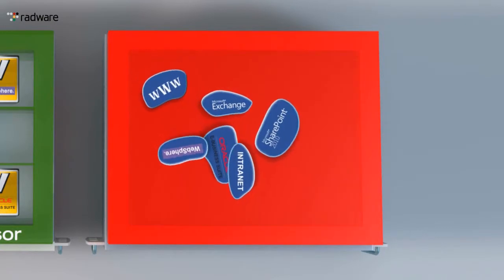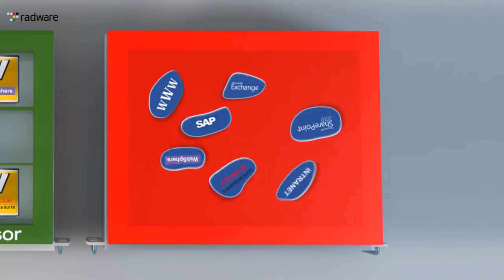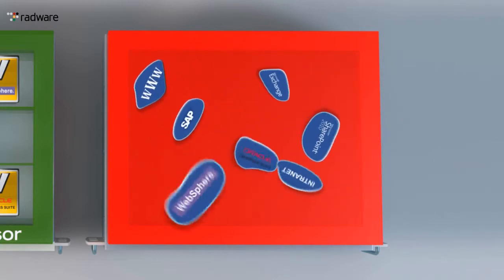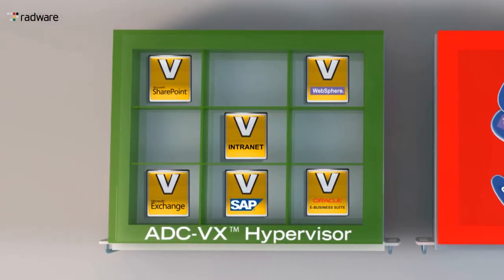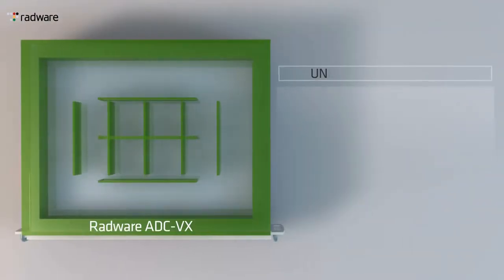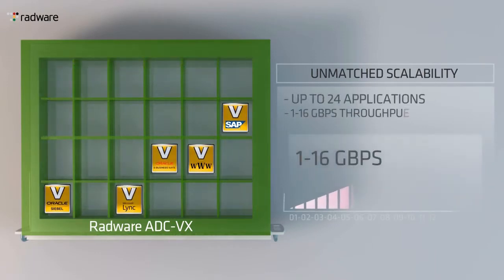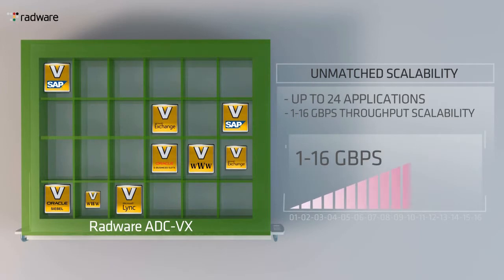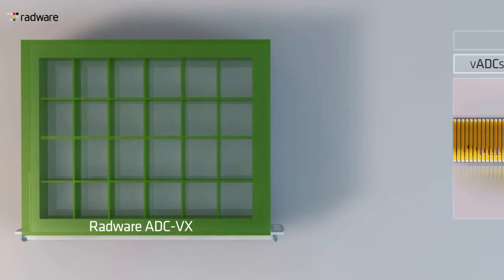In the shared ADC model, deployment of new applications requires a maintenance window, and the impact of the new application on the behavior of the other applications is unknown. With ADC-VX, each VADC runs its own OS version, which allows for independent software upgrades and deployment of new applications without a maintenance window. Radware's on-demand strategy allows you to add new VADCs, up to 24 applications, and to scale the device's throughput up to 16 times to meet your future ADC needs without hardware replacement.